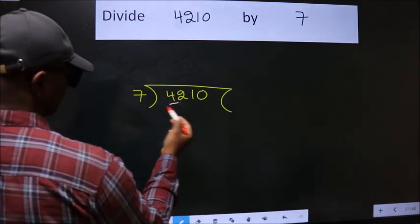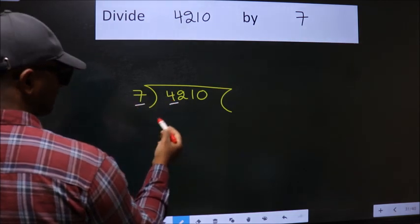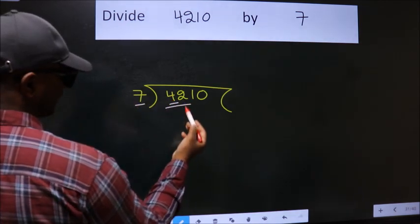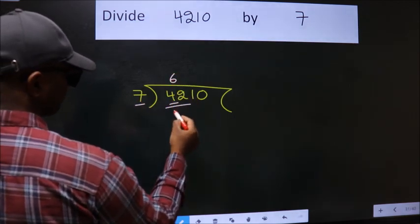Here we have 4. Here 7. 4 is smaller than 7, so we should take two numbers: 42. When do we get 42 in 7 table? 7 times 6 is 42.